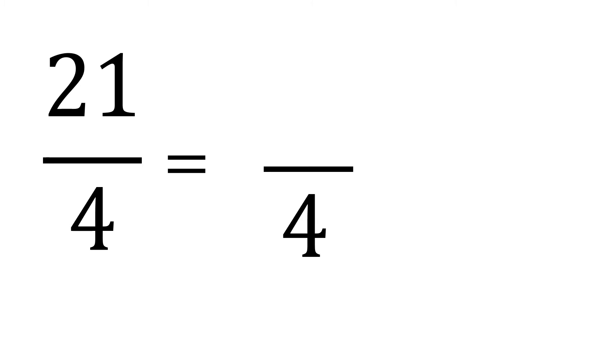Now, how about changing improper to mixed? So let's say we have 21 fourths. So, let's copy first its denominator, and we will find the whole number and the numerator.